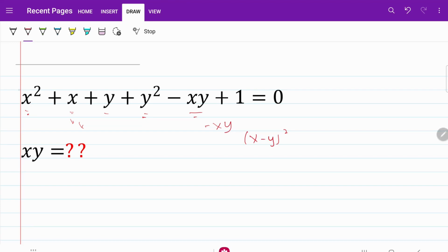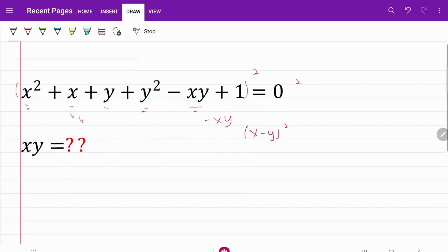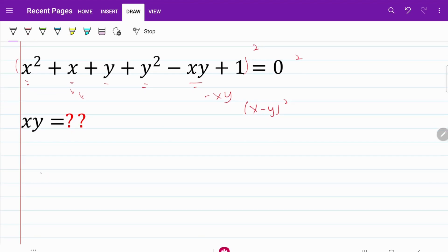So what do we need to do to get that done? What we're going to do is, I'm just going to multiply both sides by two. Let me write out what happened on the left-hand side. So now, when I multiply that by two, I have 2x square plus 2x plus 2y plus 2y square minus 2xy plus 1 plus 1 plus 1, and that's equal to 0 multiplied by 2 on the right-hand side, which is equal to 0.